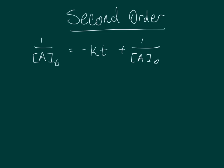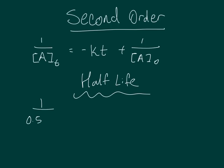Now let's look at second-order reactions. 1 divided by the concentration of A at time t equals the rate constant times time t plus 1 divided by the initial concentration of A. Substituting half the initial concentration of A gives a half-life of 1 divided by the rate constant multiplied by the initial concentration. This means that each successive half-life should be longer.